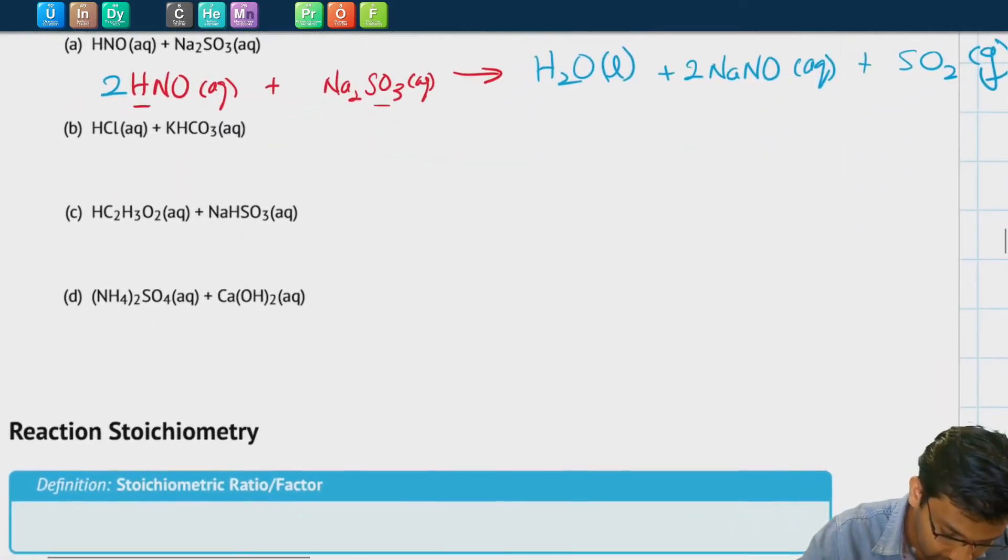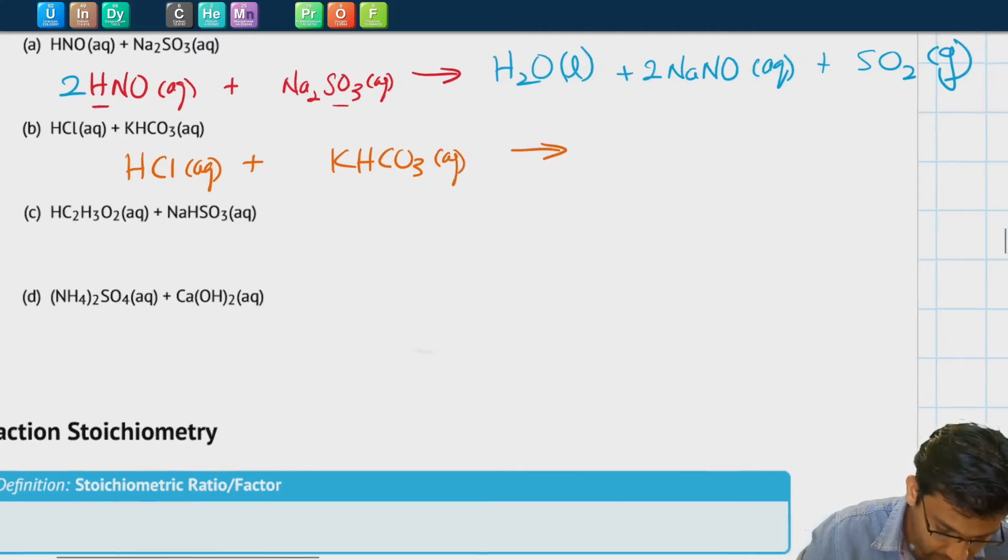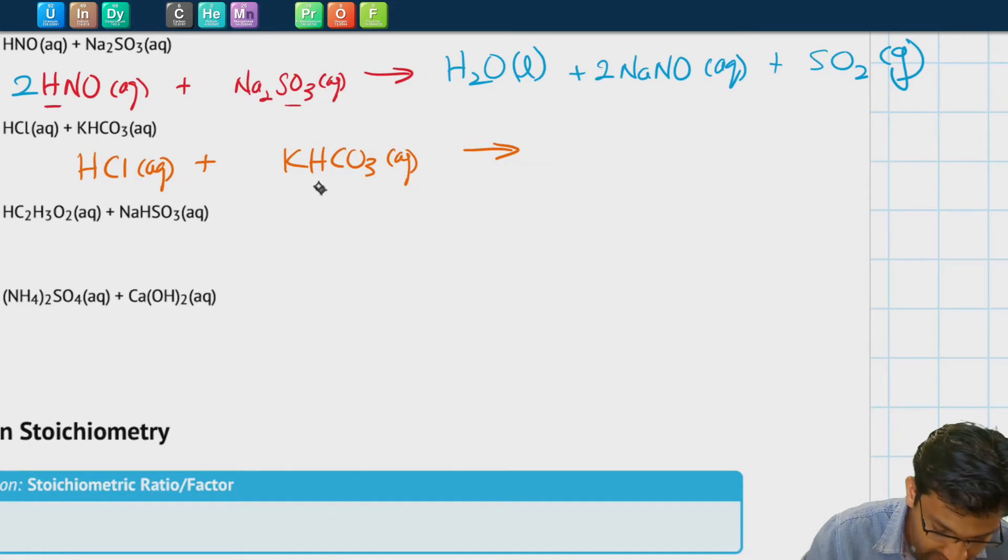Let's look at B. In B, we have HCl aqueous plus KHCO3 aqueous to form our products. Here, the H+ will react with the HCO3-, the bicarbonate ion, to form H2CO3 aqueous, plus the Cl- and the K+ will react to form KCl aqueous.